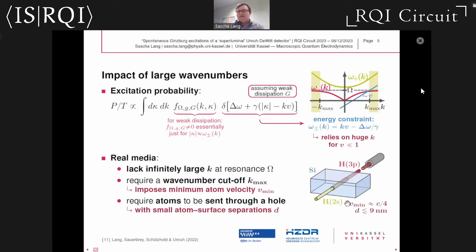We did an order of magnitude estimate where we envisioned a beam of hydrogen atoms in the 2S state, which is metastable, to pass through a hole in a block of silicon. We found that spontaneous Ginzburg excitations should be feasible if the atoms have roughly a quarter of the speed of light and atom-surface separations of roughly 9 nanometers. Meeting those requirements experimentally is definitely challenging but should not be out of reach, and that's actually quite promising.